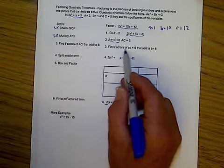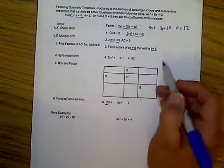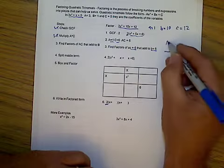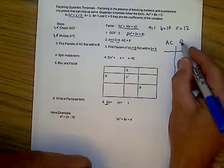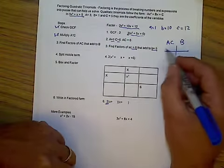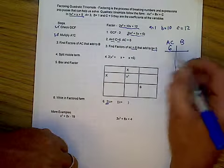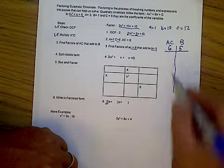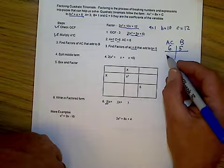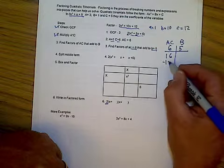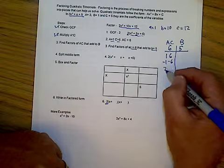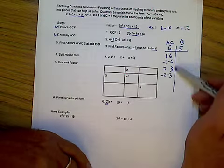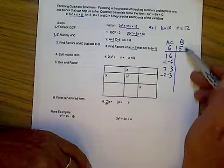And now I'm going to find factors of a times c that add to b. So I like to make this little table that shows all these things. Where this is my AC and this is my b. So a times c is 6, b is 5. So possible factors of 6 include 1 and 6, negative 1 and negative 6, 2 and 3, and negative 2 and negative 3. And I'm trying to find the ones of these that add to 5.